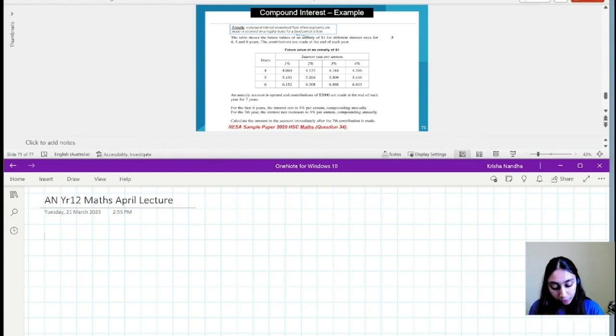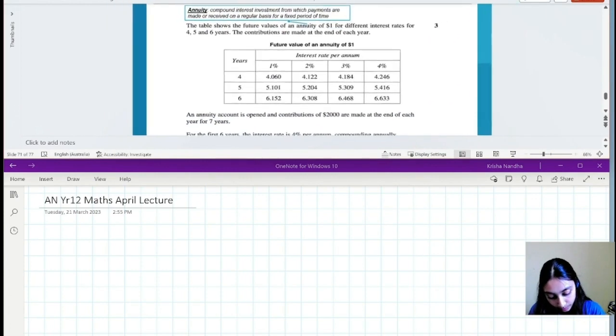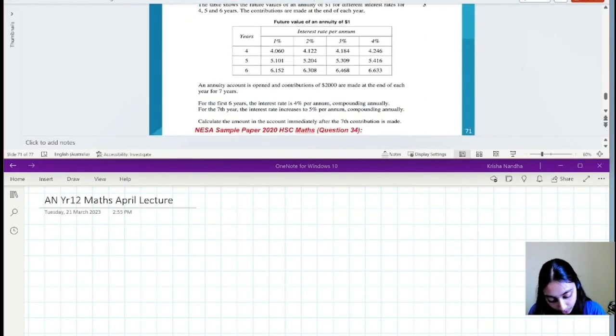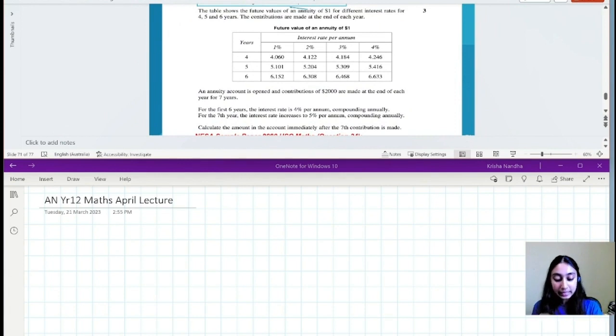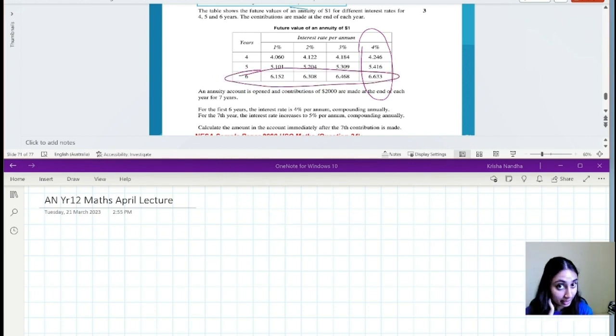So firstly, I'm going to take a look at the table for the first part of the question. For the first six years, the interest rate is 4% per annum. I'm not sure if you guys have used annuity tables before - I think it was touched on in year 10. But basically, annuity tables are really nice.